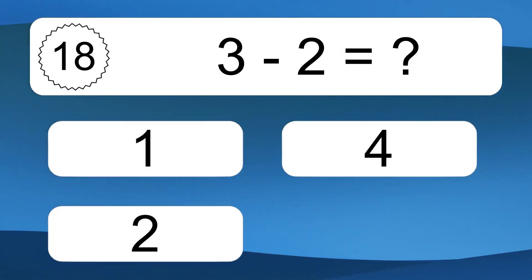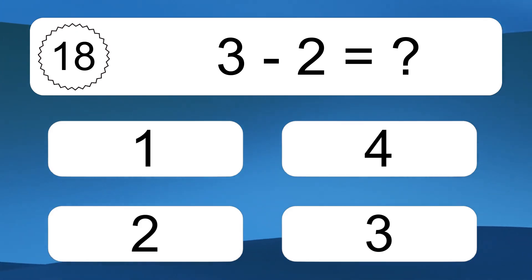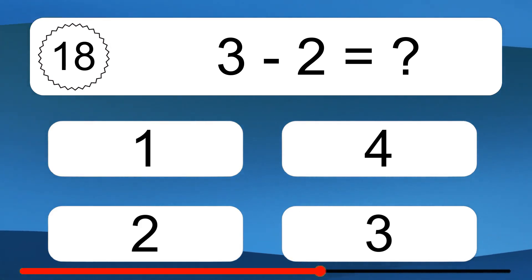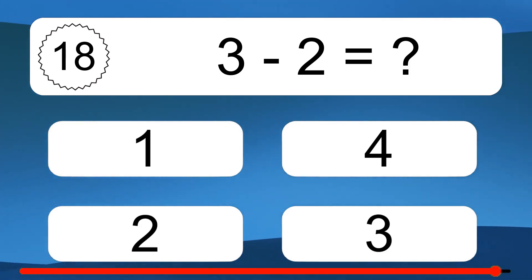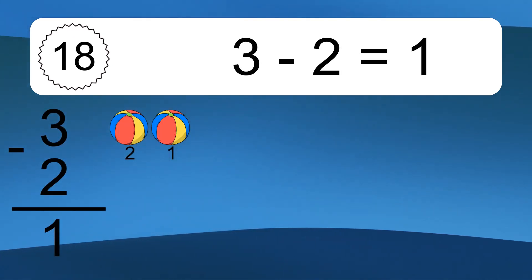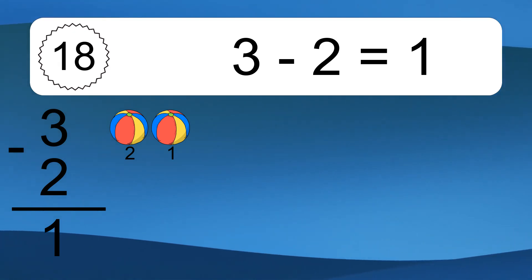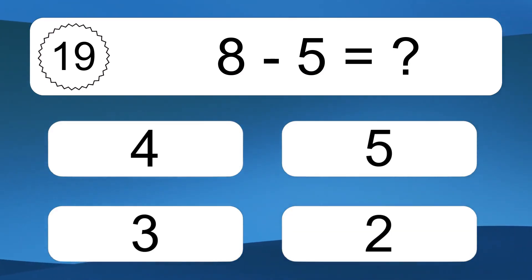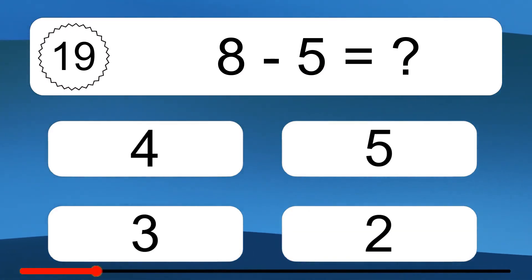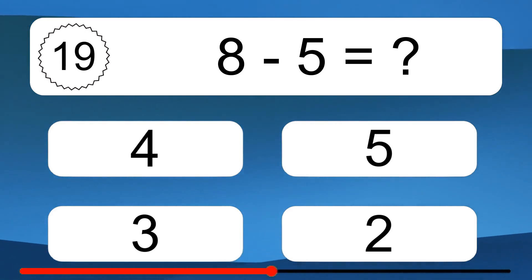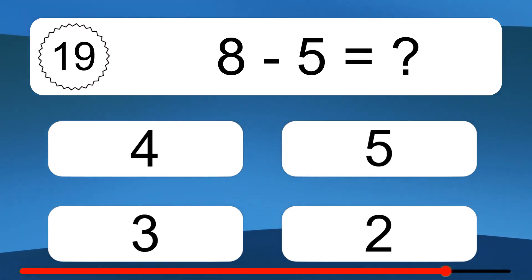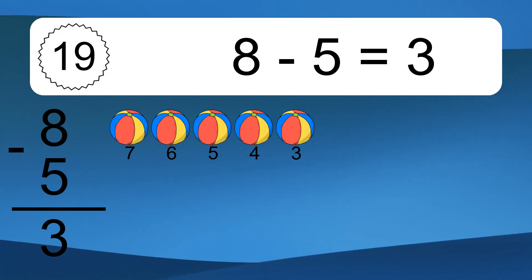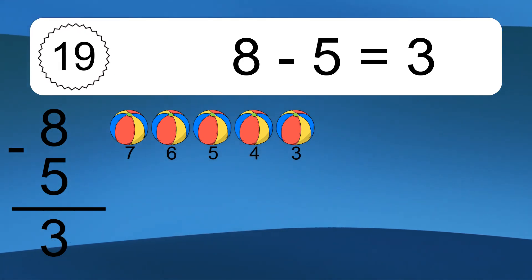3 minus 2 equals what? 3 minus 2 equals 1. Let's count it: 2, 1. 8 minus 5 equals what? 8 minus 5 equals 3. Let's count it: 7, 6, 5, 4, 3.